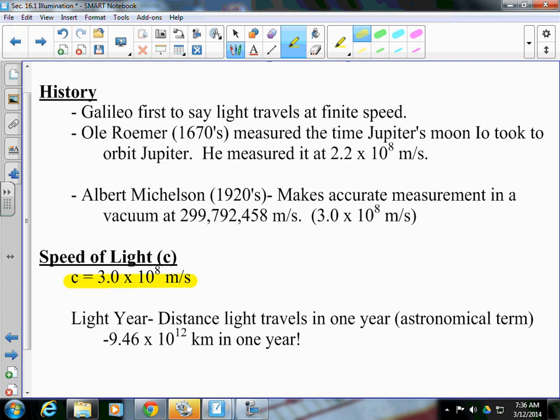Light year. You're going to hear the concept of a light year. That is a distance. It's not the amount of time. Light year is a distance. And that's the amount of distance light travels in one year, which is 9.46 times 10 to the 12th kilometers.